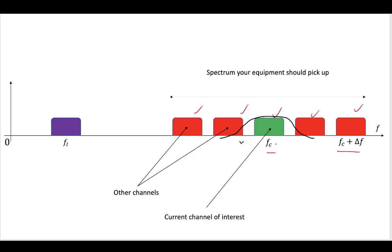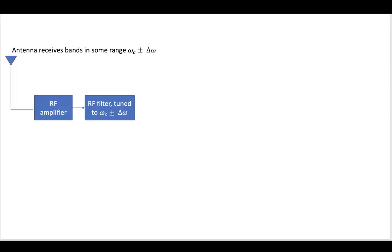You might still have a little bit of interference here and here, but the main thing you're going to get is your channel of interest. So you pass it through this RF filter that's tuned to the channel you're interested in. Out of that is going to come your modulated message that is mostly containing just the information from the channel you're interested in.